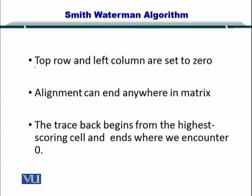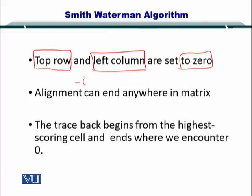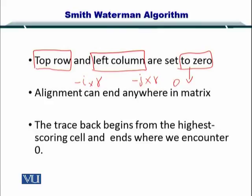The second modification: the top row and the left column are both set to zero. Earlier in Needleman-Wunsch, they were set to minus i multiplied by lambda and minus j multiplied by lambda respectively. But now they are both set to zero. Please do not forget this — this is the second difference between global and local alignment.